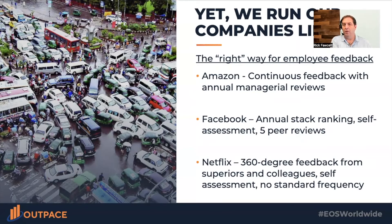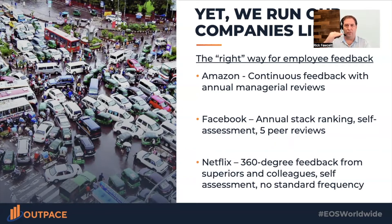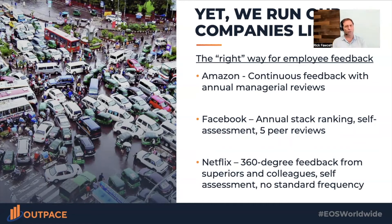For instance, at Amazon they have continuous feedback with annual reviews for performance management. At Facebook they also have an annual cycle, but it's based on stack ranking and self-assessments with peer reviews. At Netflix, there's no standard frequency, but you're supposed to get 360-degree reviews from superiors and colleagues, plus a self-assessment. People coming from each of these companies could say 'I know the right way to do it' — yet it depends on the company, and otherwise we're just going to have chaos.